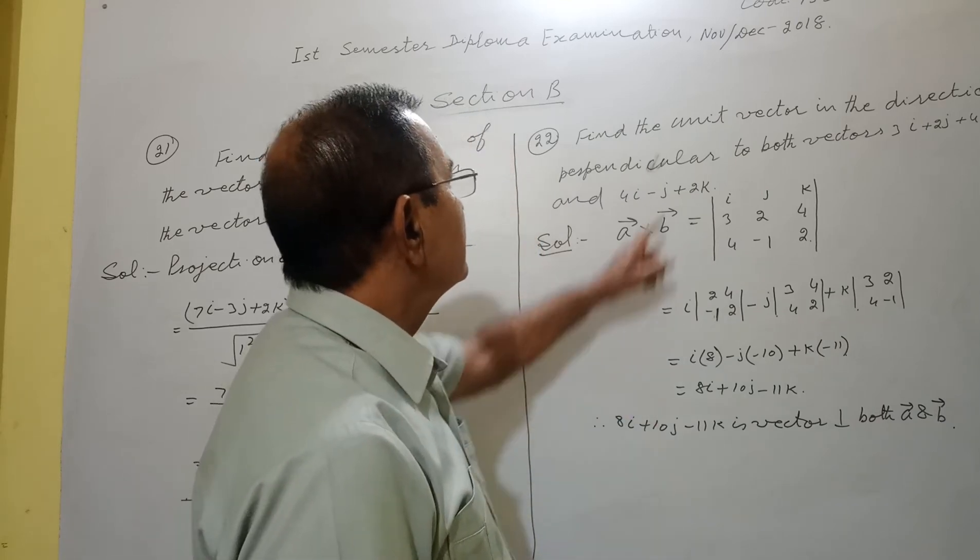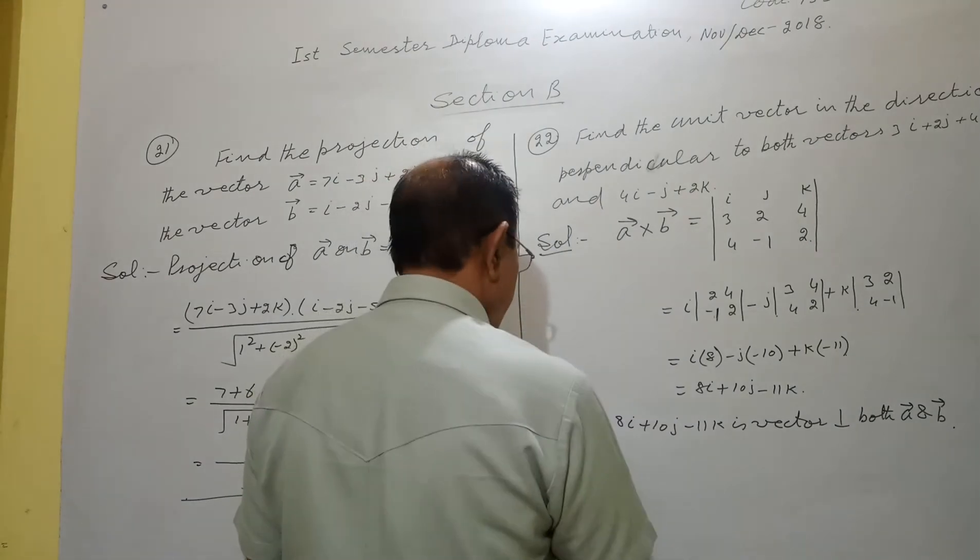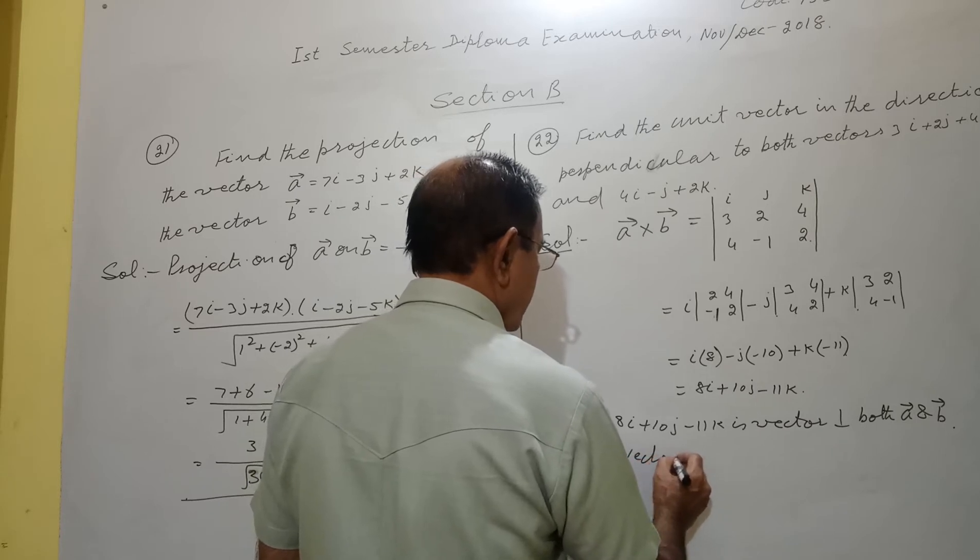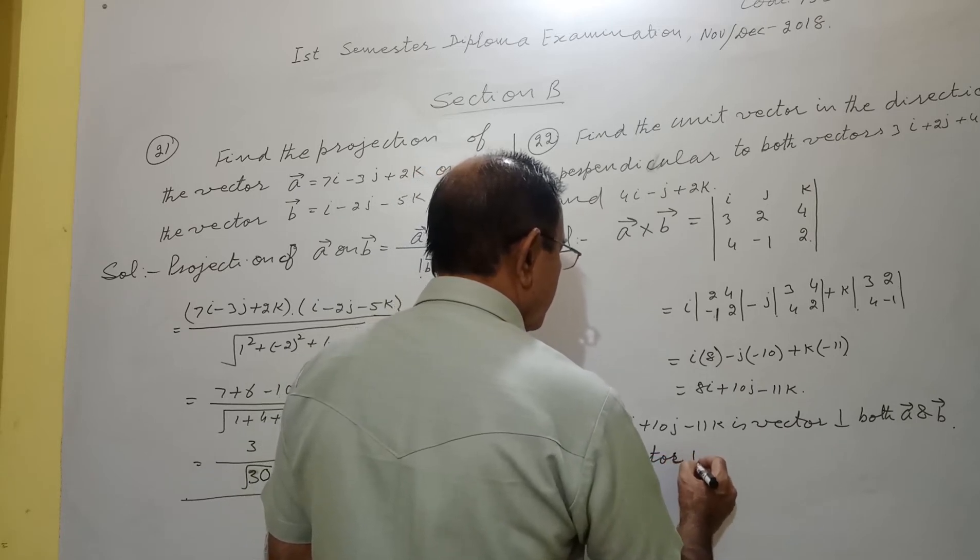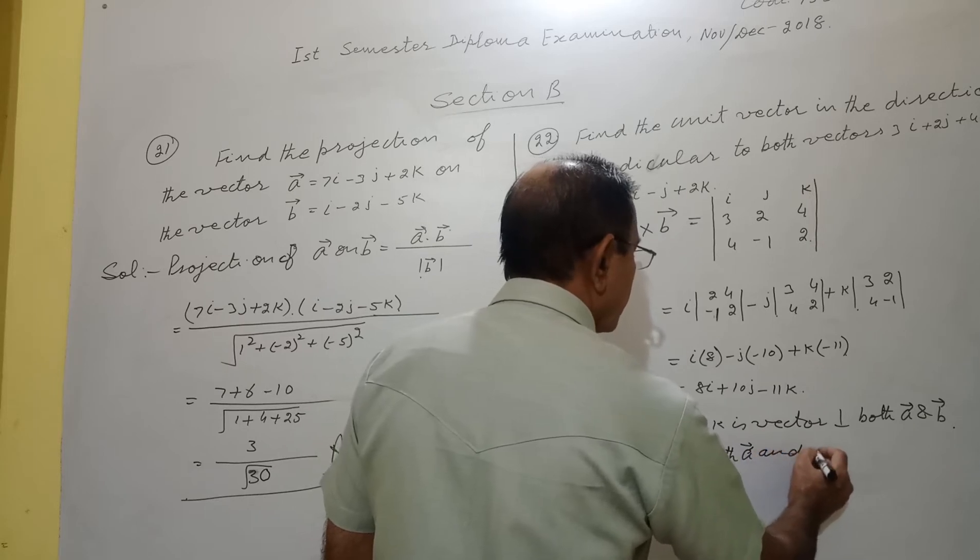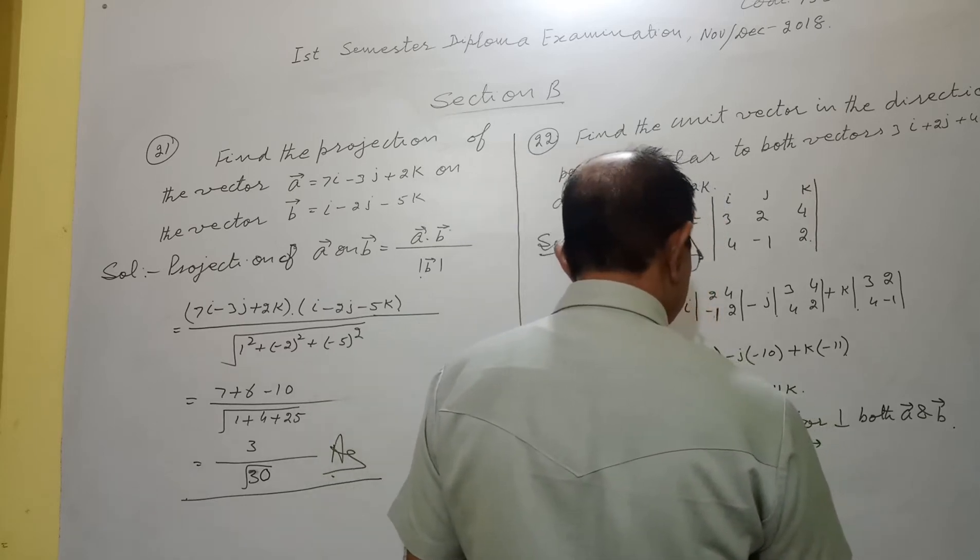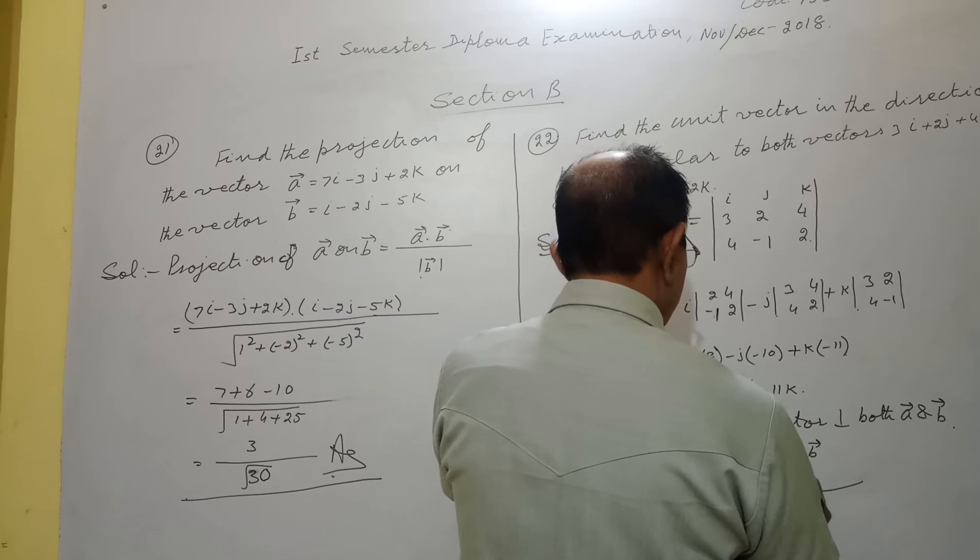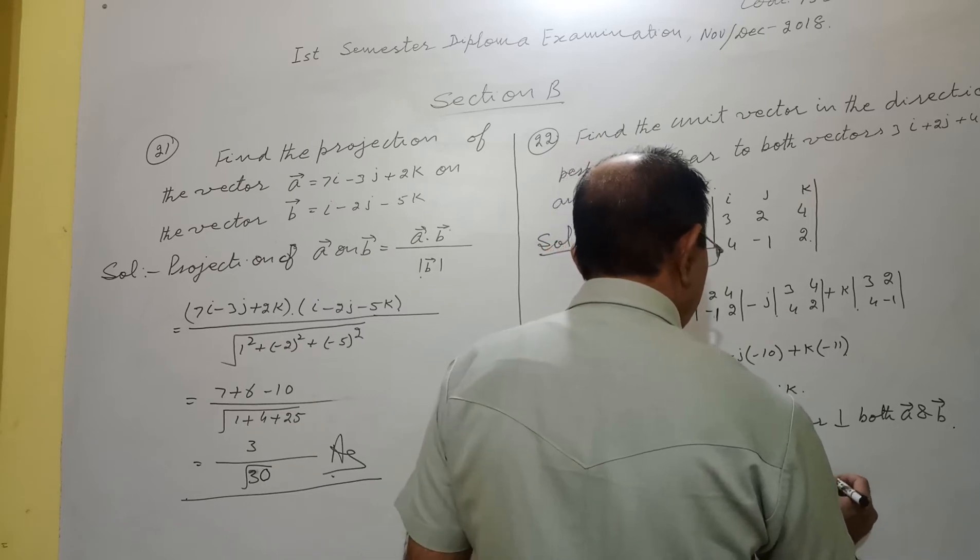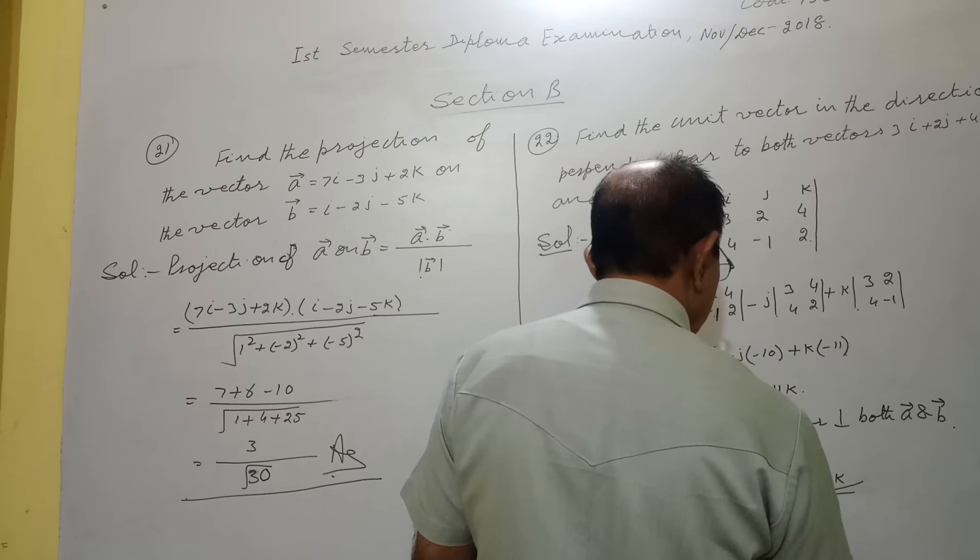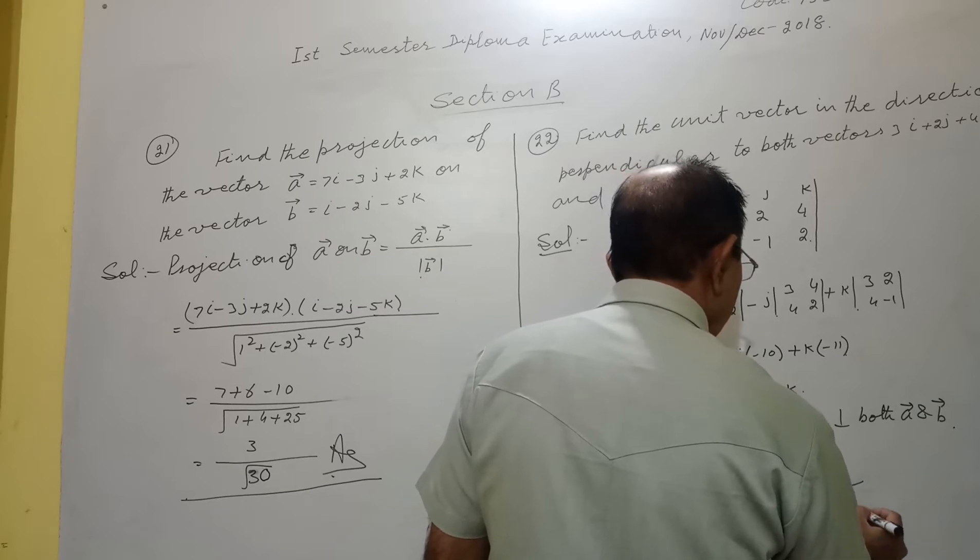As we want to find unit vector, divided by the modulus. Therefore, unit vector perpendicular to both a and b equals 8i plus 10j minus 11k divided by the square root of 8 square plus 10 square plus 11 square.